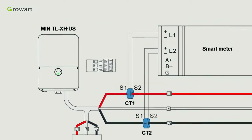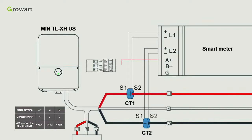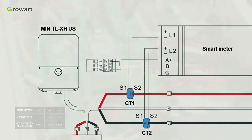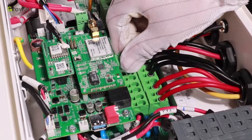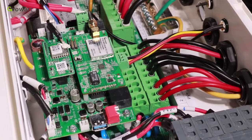Third, connect A positive port to pin 1 of connector, B negative port to pin 3 of connector, and G port to pin 2 of connector. Finally, insert this connector to the RS485 port on the communication board.